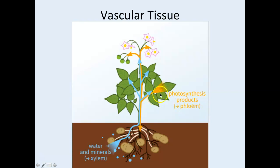The phloem is more of a two-way network, but generally the leaves are at the top and phloem moves sugar down — xylem goes up, phloem flows down. The key difference is that phloem is made of cells that are still alive.